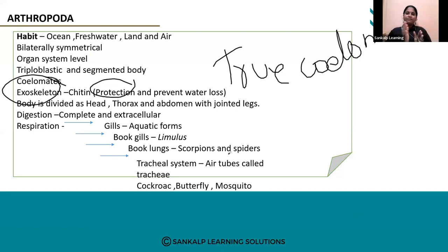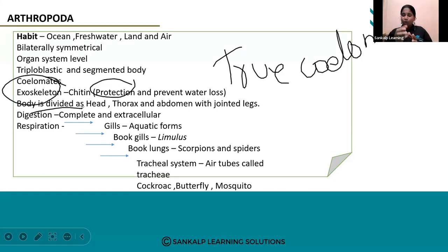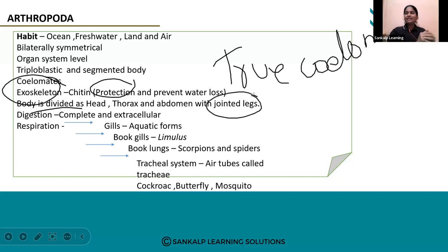The body of arthropods is divided into head, thorax, and abdomen. When you see insects like housefly and mosquito, you can observe they have jointed legs. Due to the presence of jointed legs, we call them arthropods — 'arthra' means jointed.